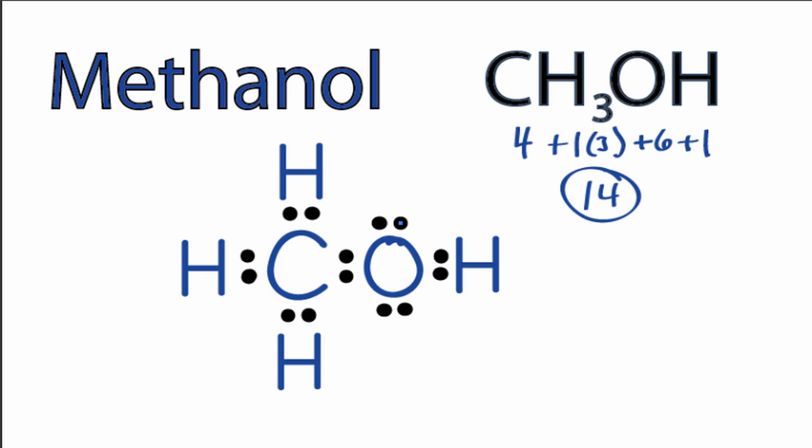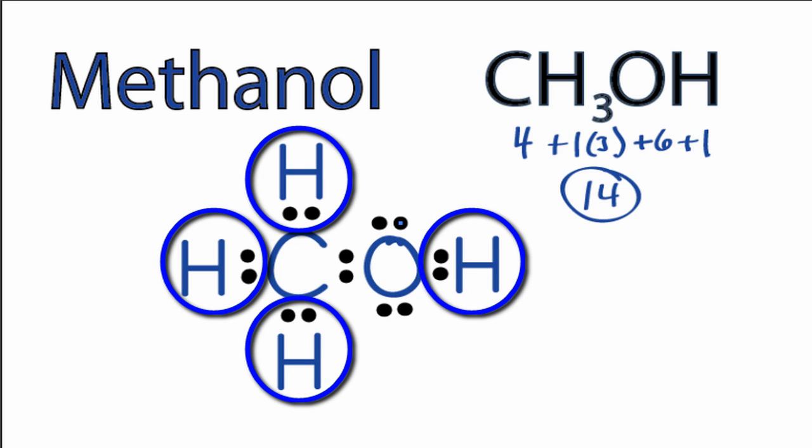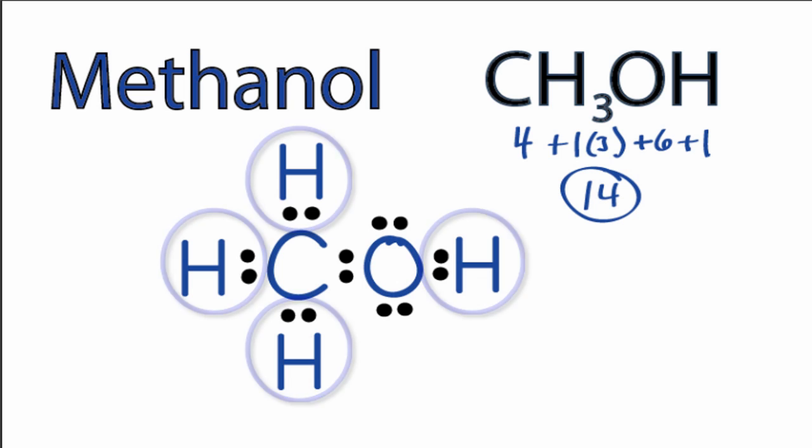You can see at this point that all of the hydrogens have 2 valence electrons. That makes their outer shell full. The carbon has 8 valence electrons, as does the oxygen.